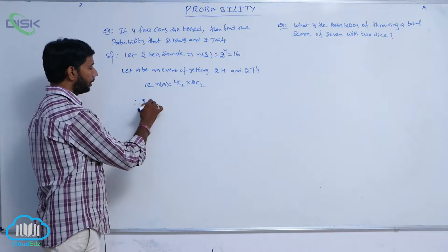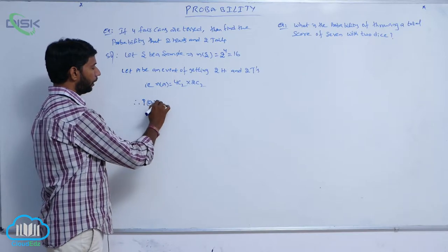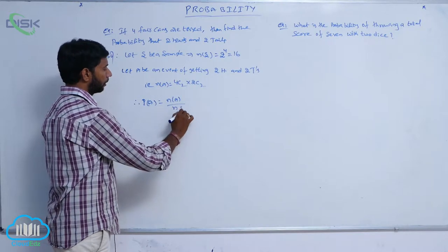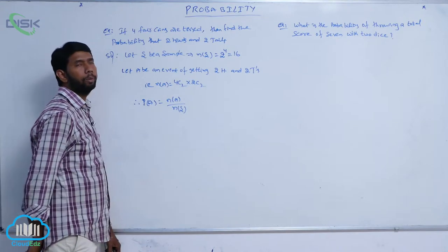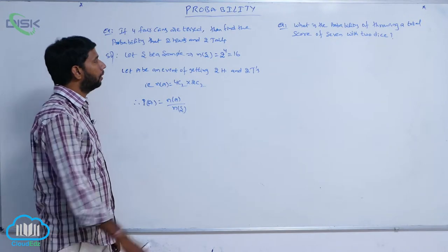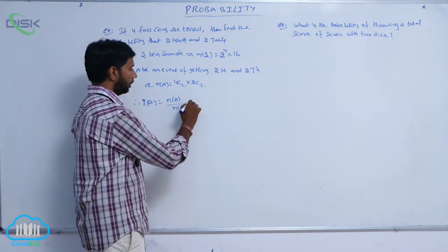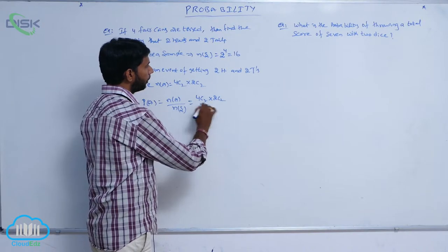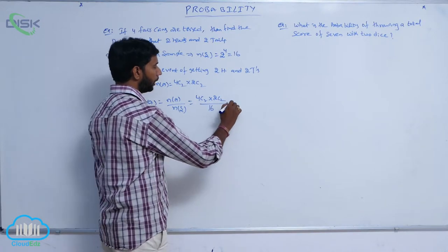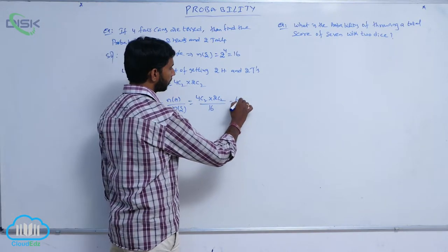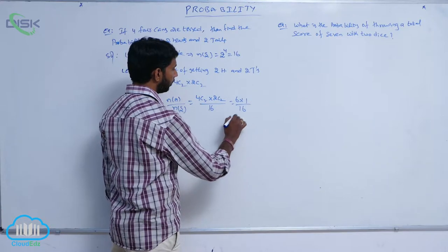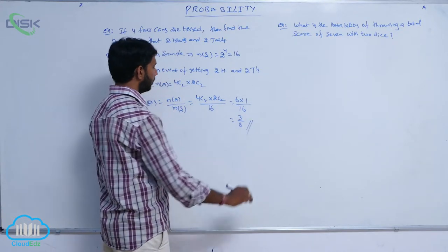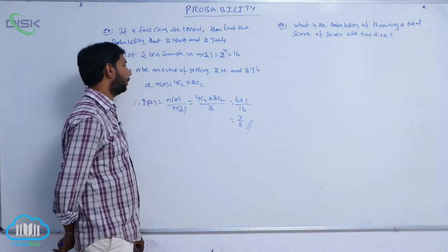Therefore, P(A) is equal to n(A) by n(S), which is equal to 4C2 into 2C2 by 16. Here 4C2 is 6, so 6 into 1 by 16 is equal to 3 by 8.